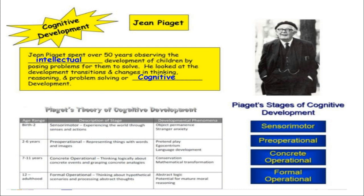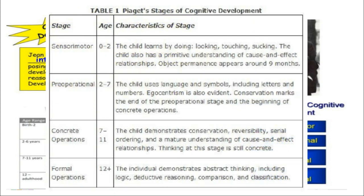We'll spend a little more time talking about formal operations later. Looking at our chart, there are different characteristics at each stage. Sensorimotor involves experiencing things through the senses. Preoperational involves learning language, symbols, and numbers. Concrete operational involves learning principles of conservation, reversibility, and serial ordering. And formal operations is when we get into abstract thinking, deductive reasoning, and such.